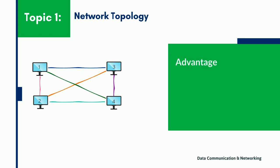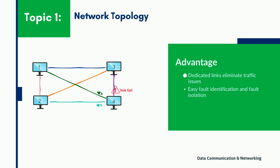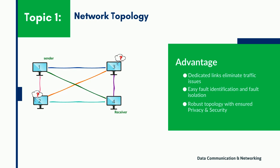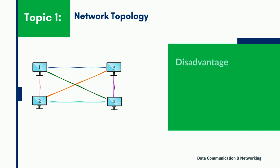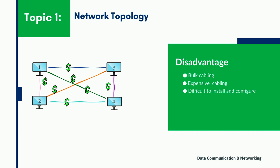In the mesh topology, the use of dedicated links guarantees that each connection can carry its own data load while reducing traffic problems. It also has the advantage of privacy or security, as every message travels along a dedicated line where only the addressed recipient can see it. However, mesh topology requires bulk wiring which may need greater space than available in walls, ceilings or floors, making it quite difficult and expensive to install and configure.